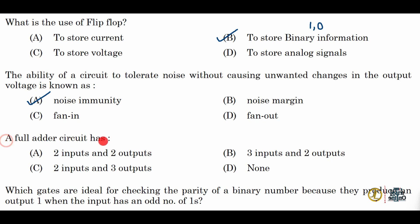Next: a full adder circuit has how many inputs and outputs? For a full adder circuit, there are 3 inputs and 2 outputs. Option B is correct.